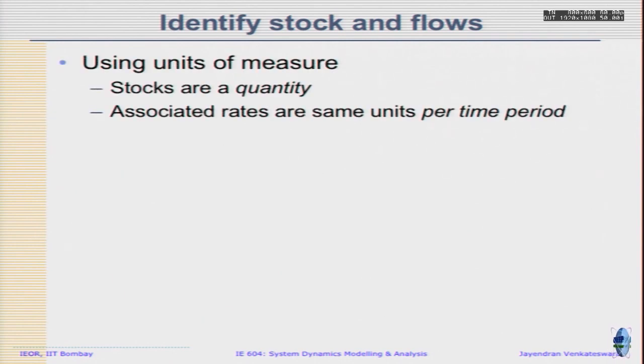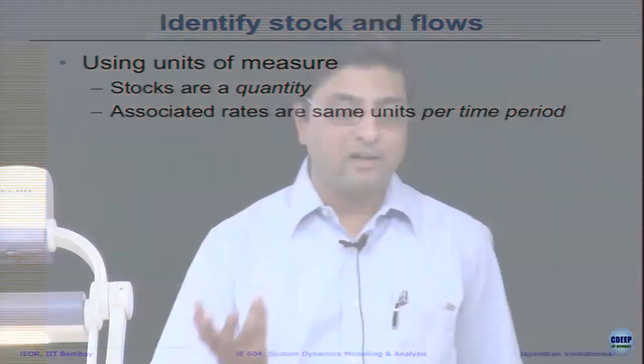To identify stocks, we can use units of measure. Stocks are quantities and associated rates have the same units per time period — that is quite simple. If food grains are in tons, then production has to be measured in tons per time period, say tons per year, and consumption should also be tons per year. Whatever units a stock has, the flows must have the same unit. You can remember this because underlying it is a differential equation — unit mismatches cannot occur.